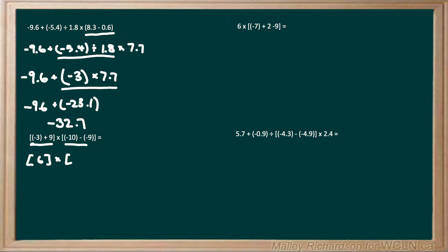Minus a negative leaves us with addition, so we have negative 10 plus 9. We can get rid of these brackets and we have 6 times negative 10 plus 9, which is negative 1. A positive multiplied by a negative leaves us with a negative answer, and 6 times 1 is 6. So our final answer is negative 6.